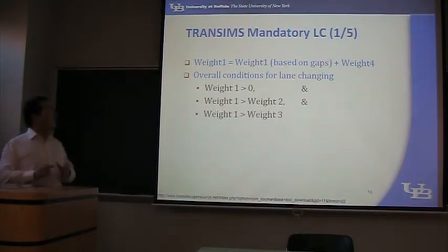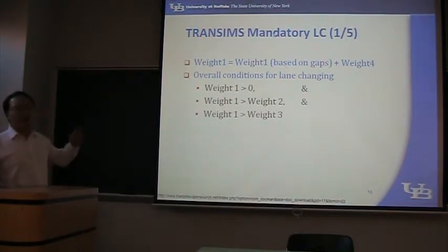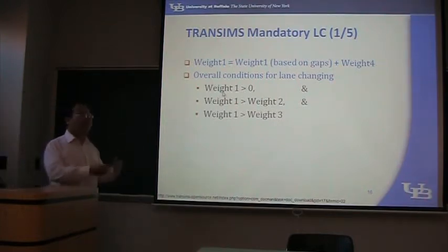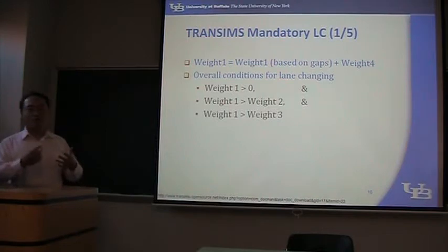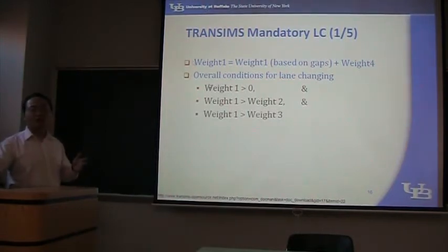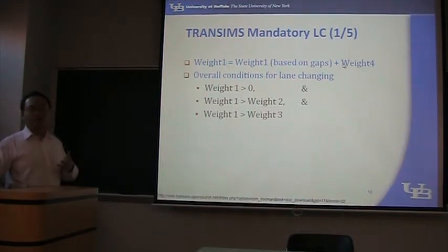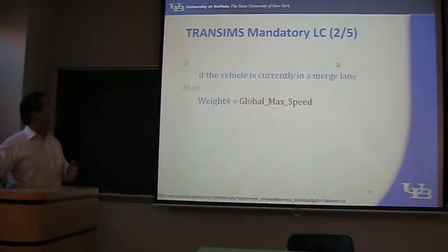We can also talk about the mandatory lane change. For the mandatory lane change, Weight 1 will be increased by adding Weight 4. The logic is the same: if Weight 1 is bigger than 0, bigger than Weight 3 and Weight 2, then lane changing becomes possible. For the mandatory lane change, only Weight 1 is changed by adding Weight 4. Let's look at how we calculate Weight 4.